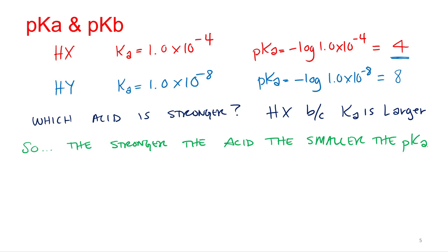So the same can be true for bases. The stronger the base, what about its KB? The stronger the base, it's going to follow the same thing, the bigger the KB. So the bigger the KB, more products, stronger base. Then when we take the negative log of that, what's that going to mean? The smaller the PKB.